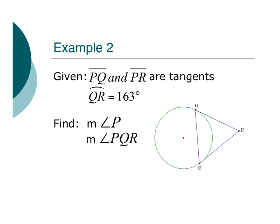Just a couple more examples here. We have P, Q, and P, R are tangents. And we know that Q, R, arc Q, R is 163 degrees. So, this is 163. Remember, that's referring to the minor arc. Otherwise, I would need three points if I was talking about this arc here. Excellent. So, that's 163 degrees there. I want to find the measure of angle P. And I also want to figure out the measure of angle P, Q, R.